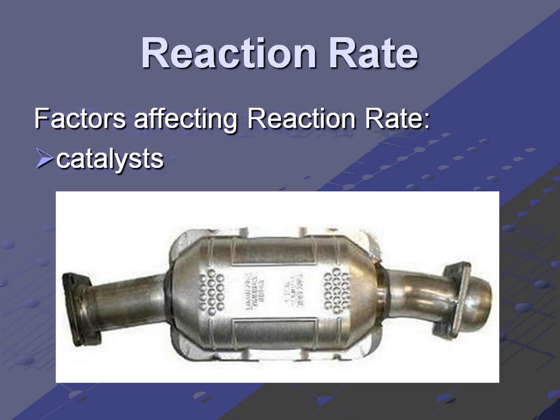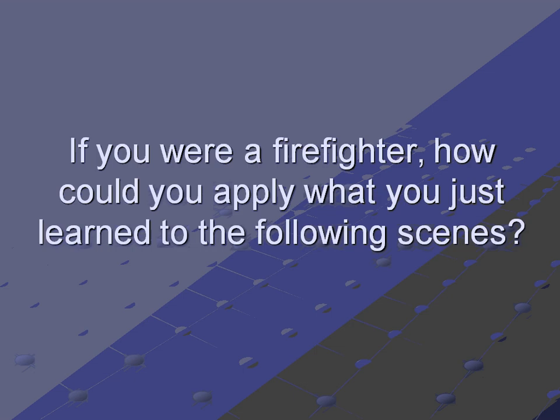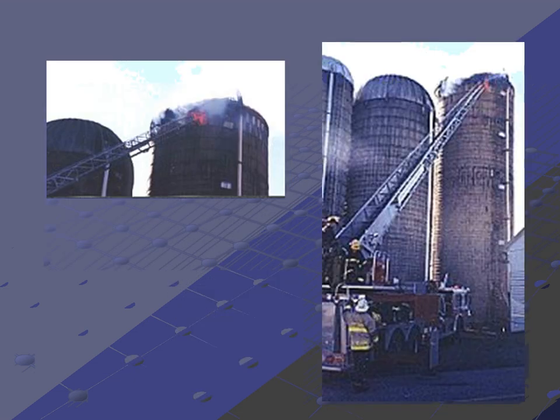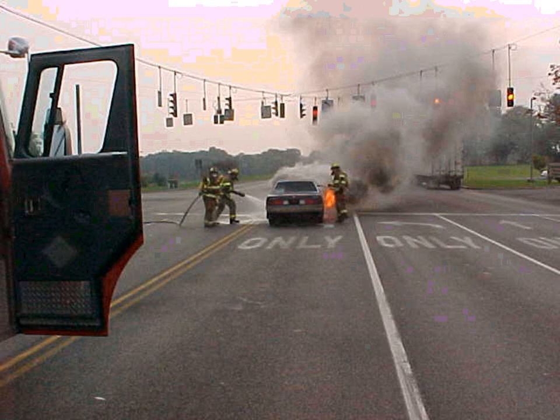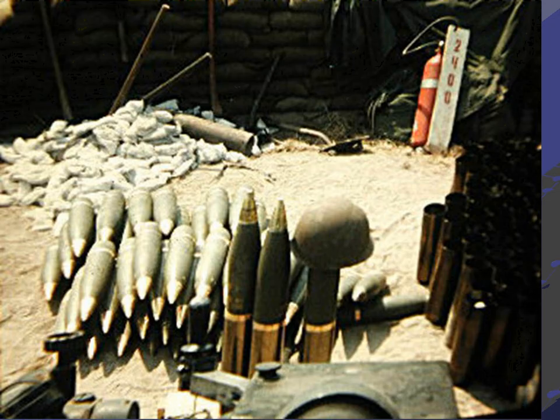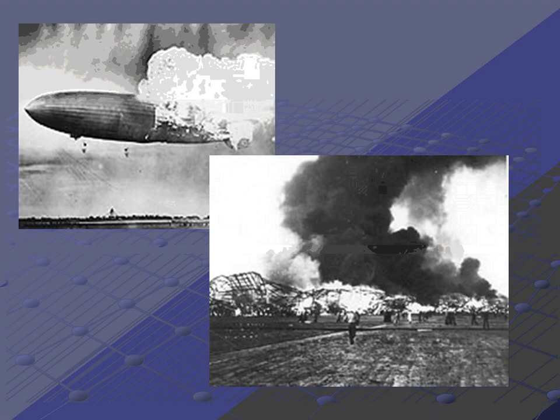Catalysts are used to speed up a reaction. Here is a catalytic converter from an old car, which was used to accelerate a chemical reaction that reduced pollution in car exhaust. And here we see the Hindenburg explosion — once again, a chemical reaction that happened very quickly with a rapid release of energy.